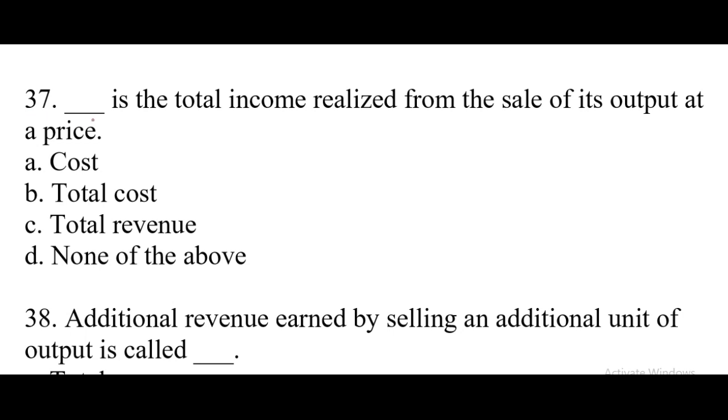Question number 37: This is the total income realized from the sale of its output at a price. Right answer option C, total revenue.